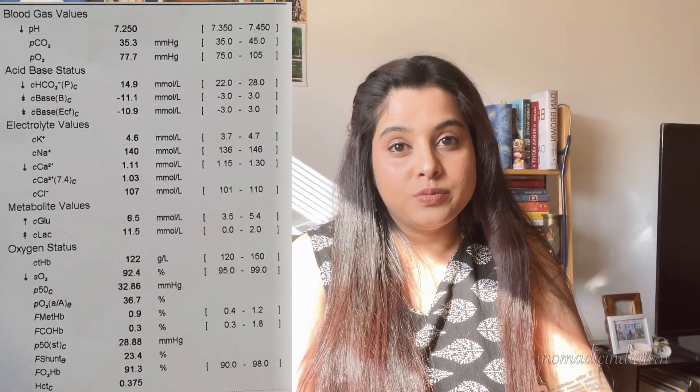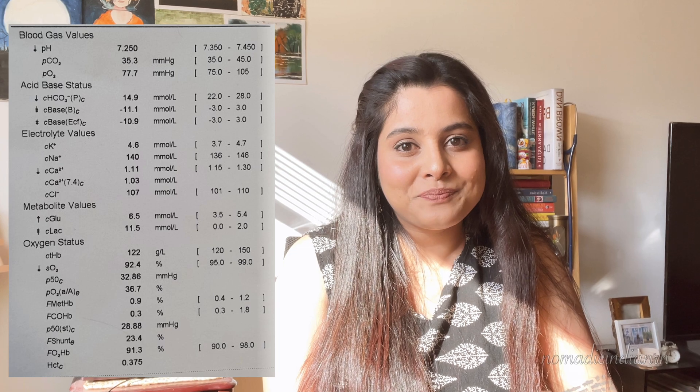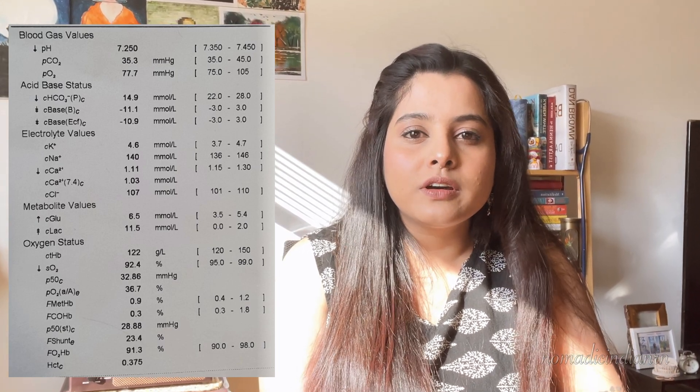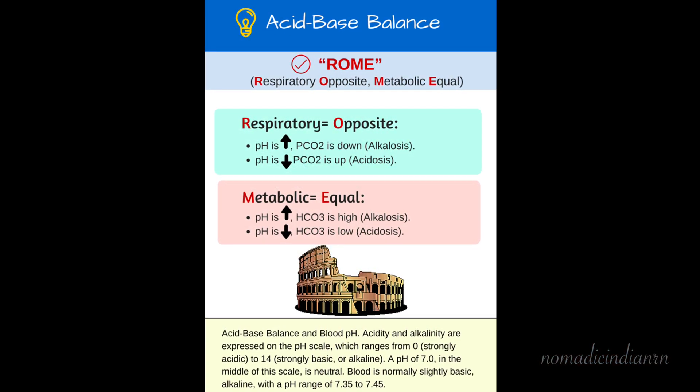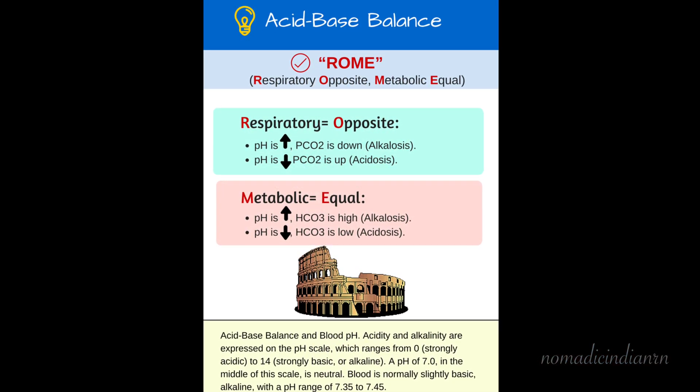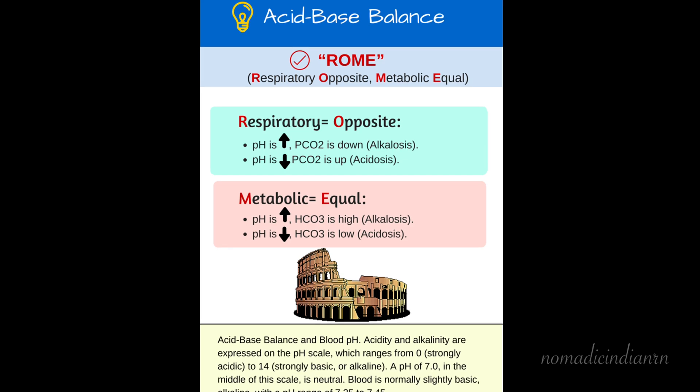First up, acid-base imbalances. The NCLEX loves to test you whether you know how to read ABG results. For that, you need to learn the good old ROME method. ROME stands for: Respiratory Opposite, Metabolic Equal.